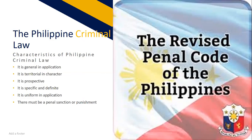Prospective: a penal law cannot make an act punishable in a manner in which it was not punishable when committed, since it can only be punished under the laws in force at the time of their commission. For example, if there was no law on rape yet and you committed rape today, and tomorrow a law is enacted, that law cannot be applied to you because there was no rape law when you committed the act. Specific and definite: criminal law gives a strict definition of the specific act committed. However, when doubt exists as to whether a definition in the Revised Penal Code applies to the accused, the judge is to decide in favor of the accused.